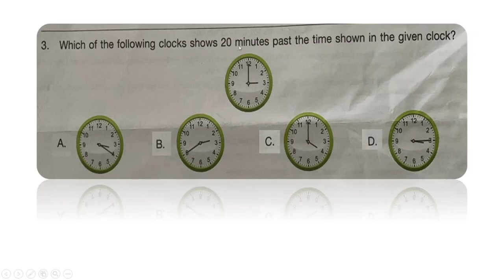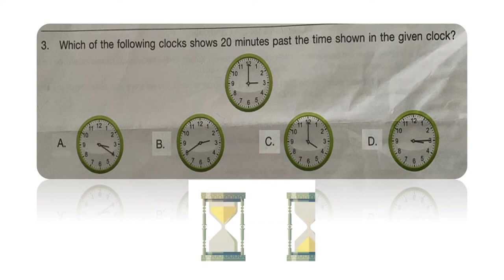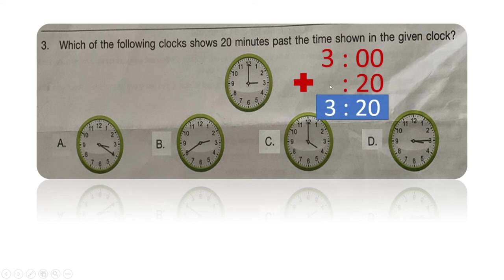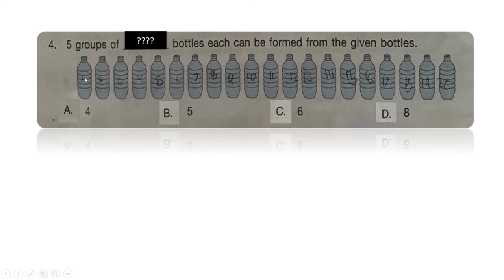Next question: which of the following clocks shows 20 minutes past the time shown in the given clock? The given clock shows 3 o'clock. We need to find the clock which shows 20 minutes past, meaning we add 20 minutes to 3 o'clock, which gives 3:20. Of the given options, it is option A which shows the time as 3:20. That's our right answer.